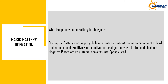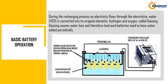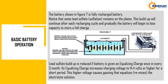What happens when a battery is charged? During the battery recharge cycle, lead sulfate (sulfation) begins to reconvert to lead and sulfuric acid. Positive plates' active material is converted into lead dioxide and negative plates' active material converts into spongy lead. During the recharging process, as electricity flows through the electrolyte, water (H₂O) is converted into its original elements — hydrogen and oxygen — called gassing. Gassing causes water loss, and therefore lead acid batteries need to have water added periodically. The battery shown in FIG 7 is a fully recharged battery.